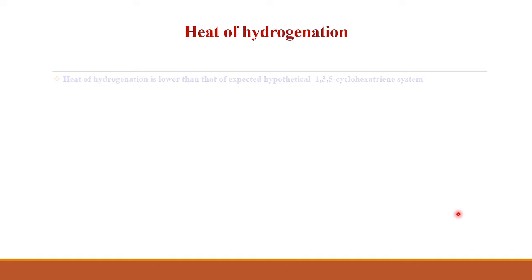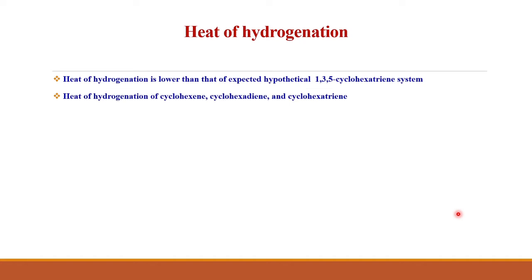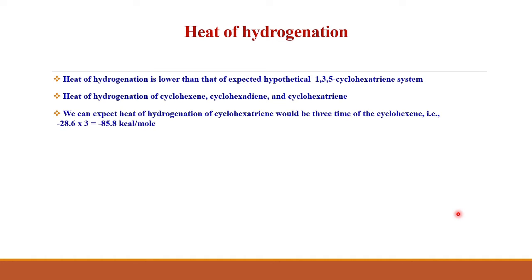Let us see the heat of hydrogenation. Benzene has a lower heat of hydrogenation than that of the expected 1,3,5-cyclohexatriene system. The heat of hydrogenation is the amount of heat evolved when one mole of an unsaturated compound is hydrogenated. The heat of hydrogenation values of cyclohexene, cyclohexadiene, and cyclohexatriene are shown here.